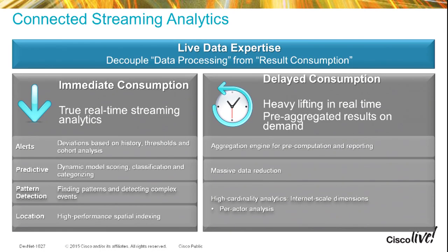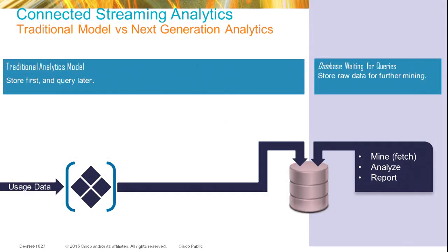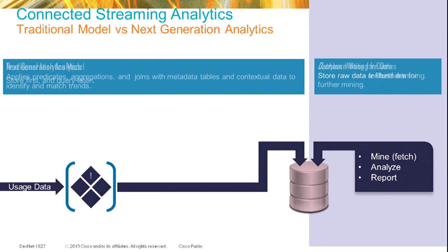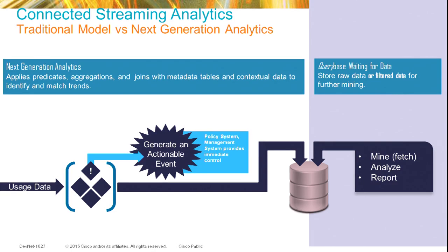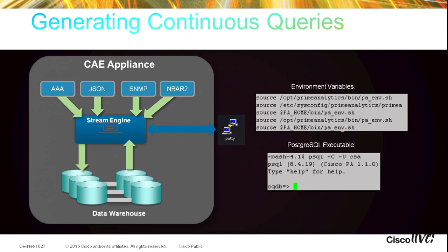With delayed consumption, we can create sliding windows — consuming only data over a certain time interval. Your traditional model, like IBM Hadoop, stores data first and queries it later. With streaming data, we can generate an actionable event as it takes place, which is important for Twitter feeds, security events, and similar scenarios. That's how our continuous query mechanism works.